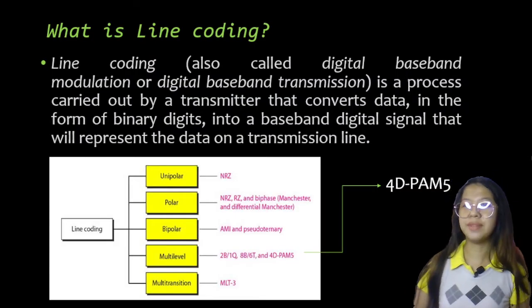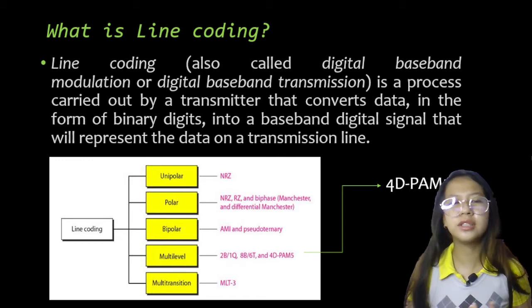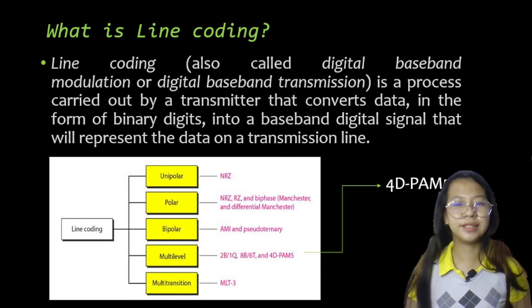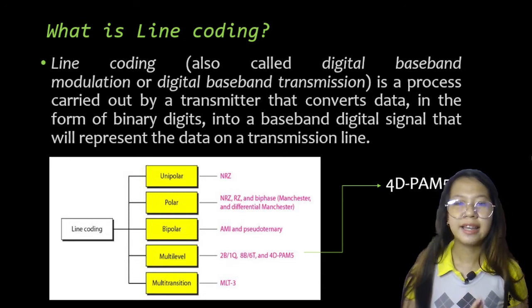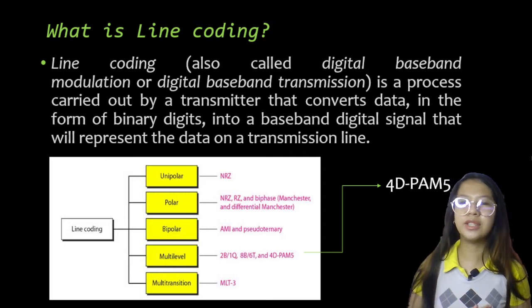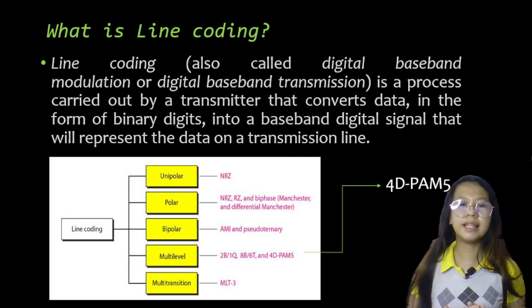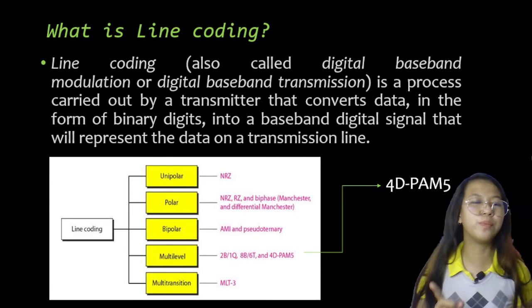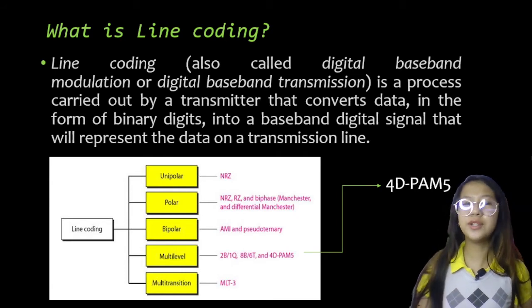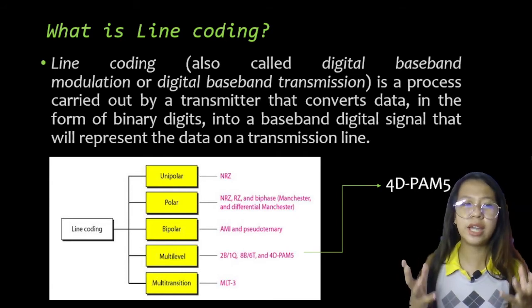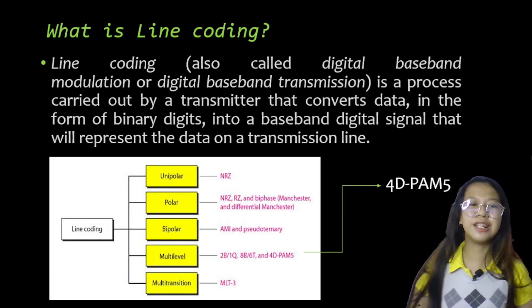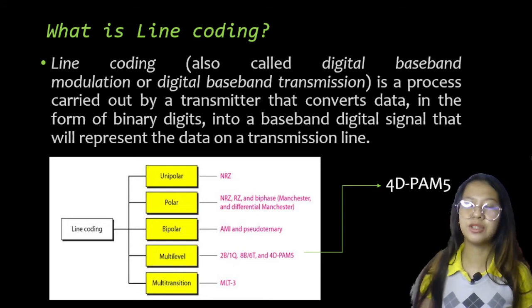What is Line Coding? Line coding, also called Digital Baseband Modulation or Digital Baseband Transmission, is a process carried by the transmitter that converts data in the form of binary digits into a baseband digital signal that will represent the data on a transmission line. The transmission line in question could be a link between two devices in a computer network, or it could be part of a much larger telecommunications network. The receiver is responsible for converting the incoming line-coded signal back to binary data.